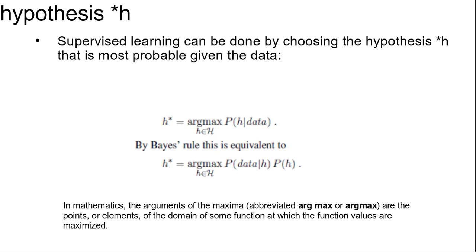In mathematics, the arguments of the maxima, or argmax, are the points or elements of the domain of some function at which the function values are maximized. By Bayes rule, this is equivalent to h* = argmax P(data | h) · P(h).